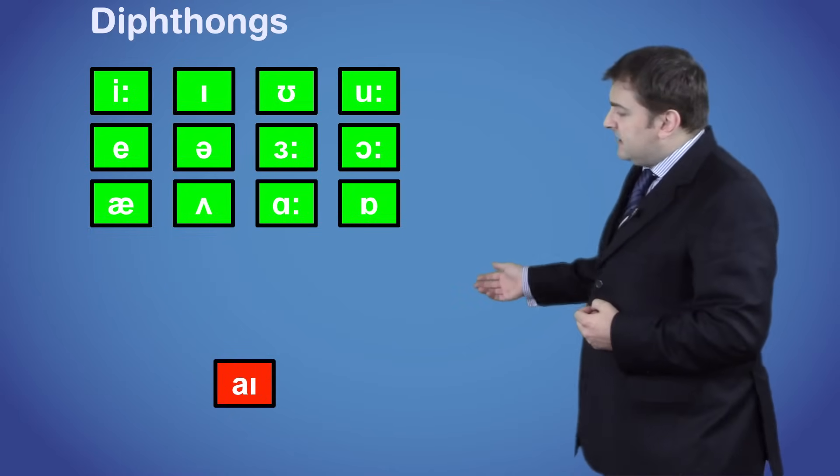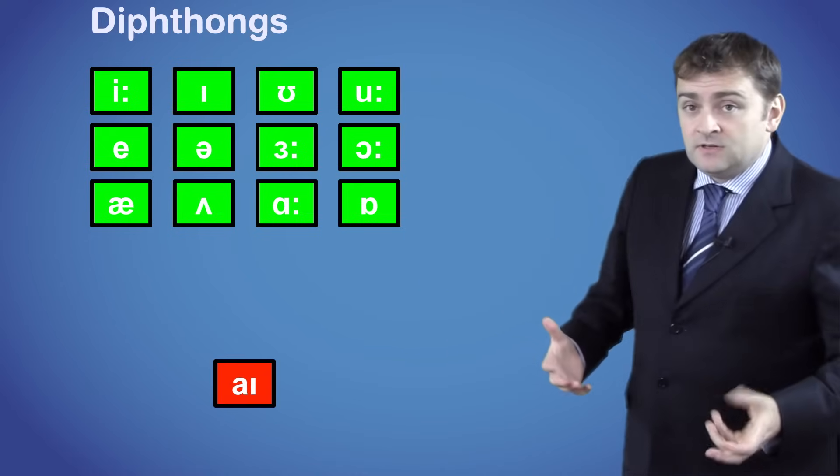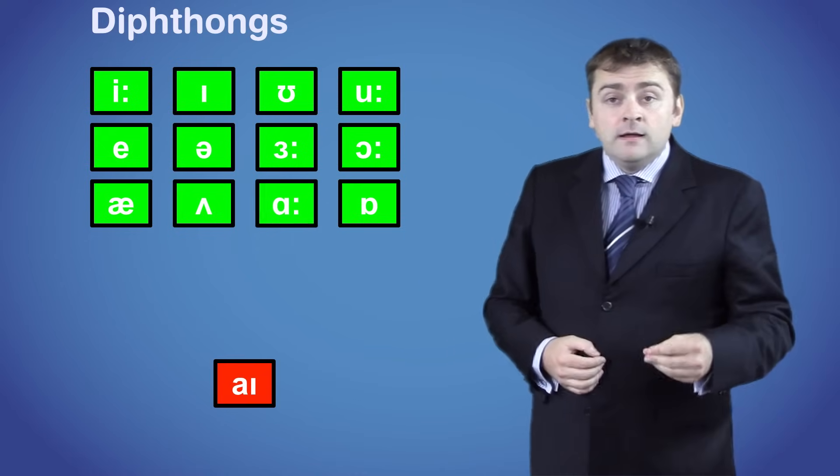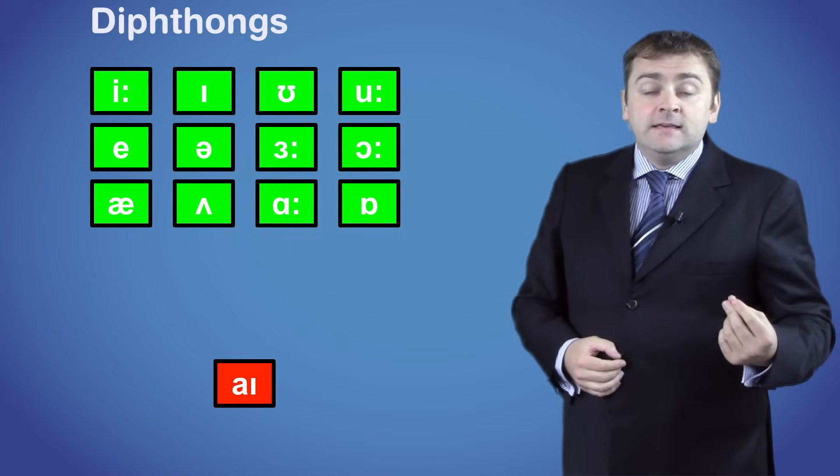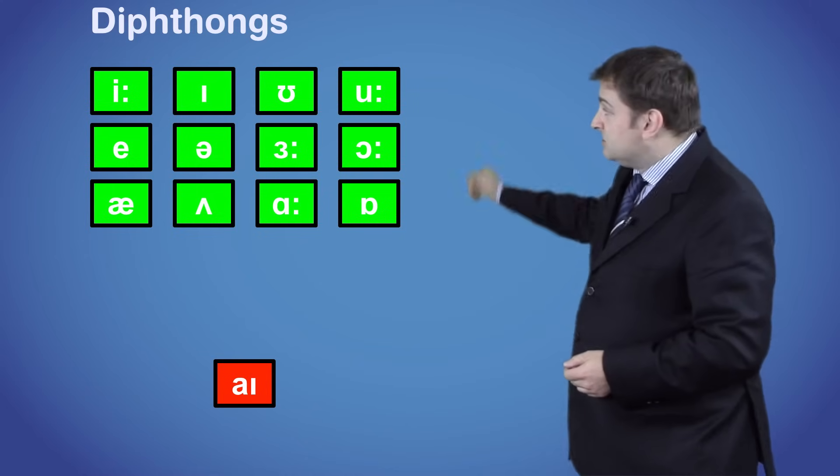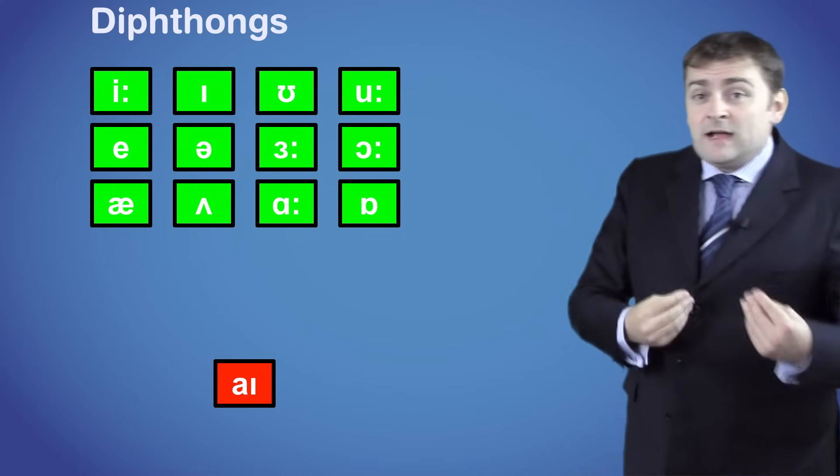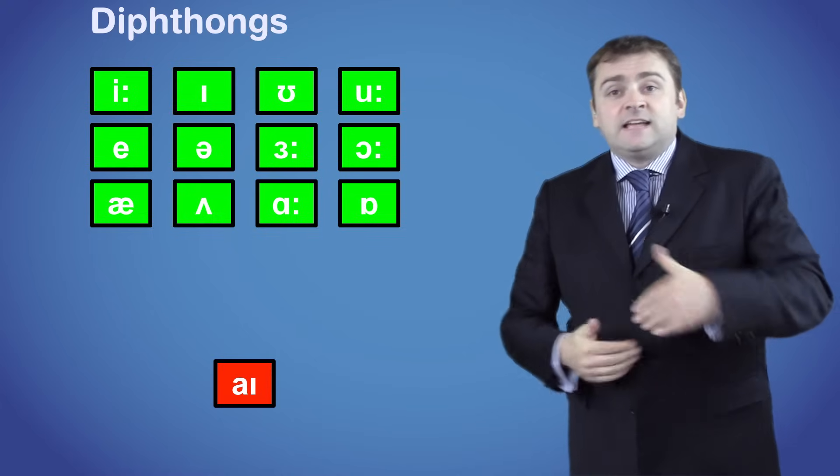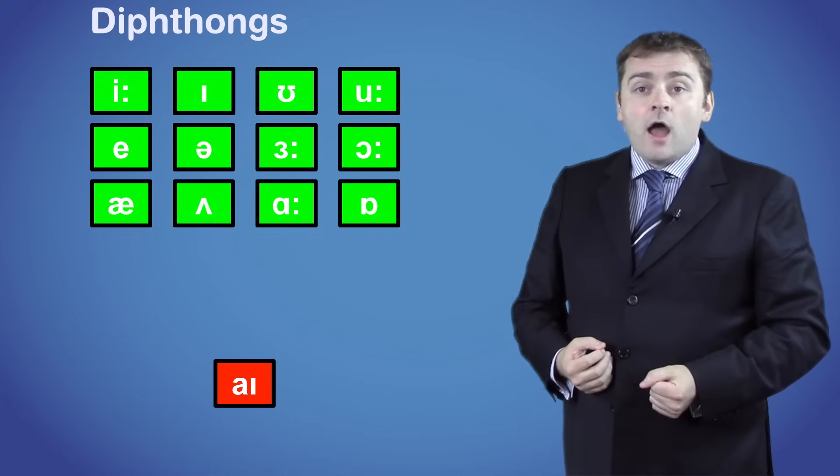The next sound is AI, which is a combination of A and I or E. Now we are going from the bottom row to the top, so our mouths start wide open and close as we say the sound. AY.